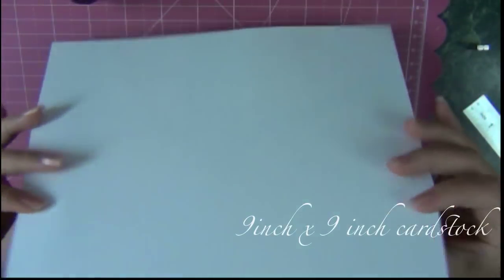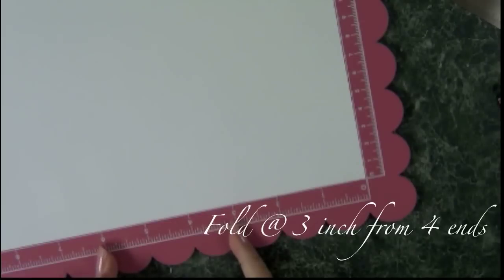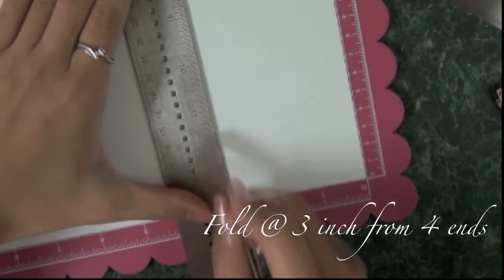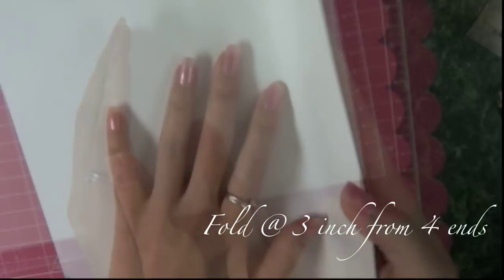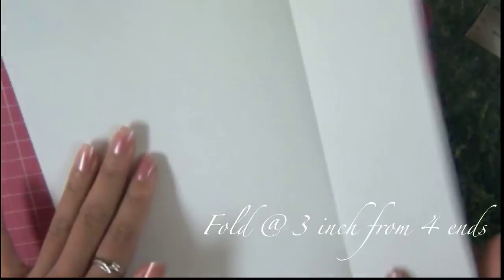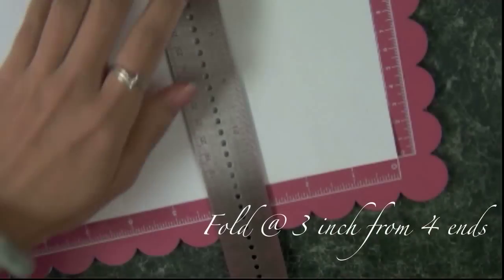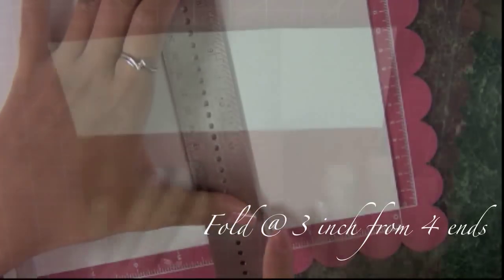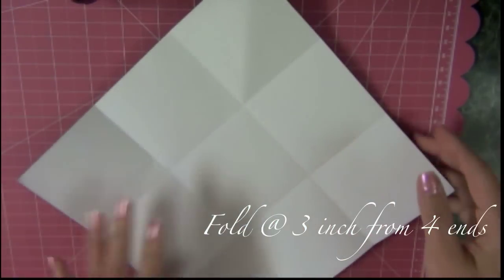First you will need 9x9 cardstock. Fold 3 inches from 4 sides of the paper. Cardstock is typically thicker than usual paper. It's the kind of paper that companies use to make greeting cards. You can also use some thick scrapbooking paper. I'm using a tool to create the crease before folding it. This is what you should end up with.